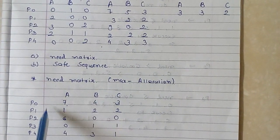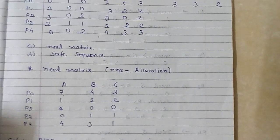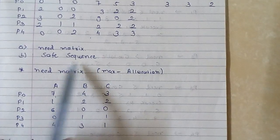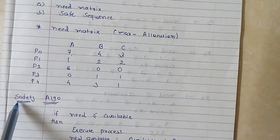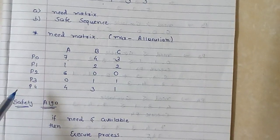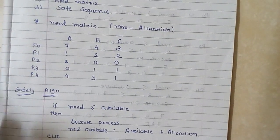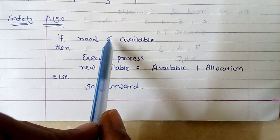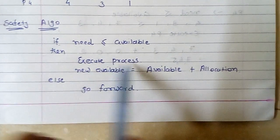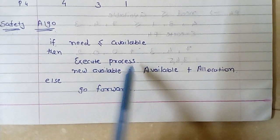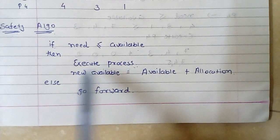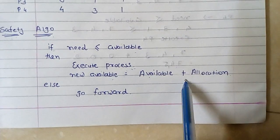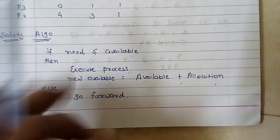To find the safe sequence, you apply the Safety Algorithm. The safety algorithm states: if Need is less than or equal to available resources, then execute the process, and the new available becomes available plus allocation. Otherwise, go forward to the next process.